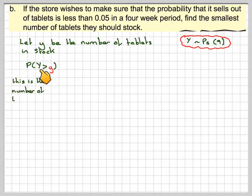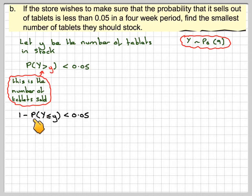We want the probability that Y is greater than y. Y is the number of tablets that are sold in a four-week period. This is the number of tablets that are sold in a four-week period. We want this to be bigger than that to be in stock, but that needs to be less than 0.05. Now, to do greater than y, we need to do 1 minus. The probability that Y is less than or equal to little y is less than 0.05. And if we take that over there and that over there, we get that the probability that Y is less than or equal to y must be greater than 0.95.